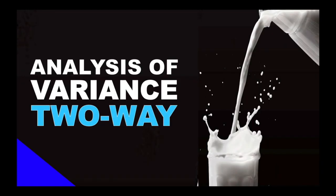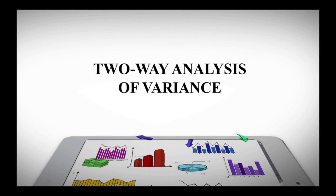Welcome to our next topic. For this presentation, we will go into two-way ANOVA, or two-way analysis of variance. This will be the last type of analysis of variance we will discuss, since we are done now with one-way ANOVA and the randomized block design. So this is the third and last type of ANOVA — two-way analysis of variance, or simply two-way ANOVA.